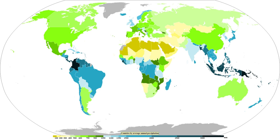Stratiform or dynamic precipitation occurs as a consequence of slow ascent of air in synoptic systems, such as over surface cold fronts and over and ahead of warm fronts. Similar ascent is seen around tropical cyclones outside of the eyewall, and in comma-head precipitation patterns around mid-latitude cyclones. A wide variety of weather can be found along an occluded front, with thunderstorms possible, but usually their passage is associated with a drying of the air mass. Occluded fronts usually form around mature low-pressure areas. Mars has precipitation that most likely takes the form of ice needles, rather than rain or snow.